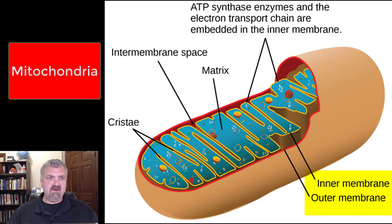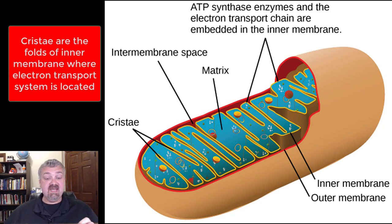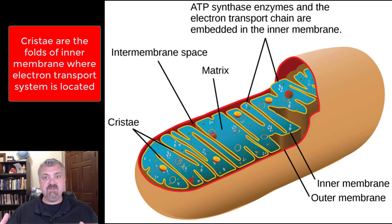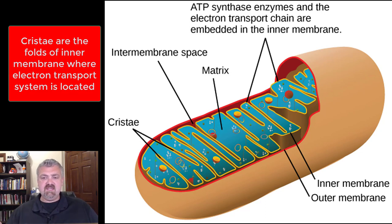The inner membrane is where the business end occurs. The inner membrane has, as you can see here, the cristae — those are the folds. And like everywhere else in the body, folds are used to increase surface area. Then you have the matrix, which is the goopy substance. The folds, or the cristae of the inner membrane, are where the actual enzymes are that generate ATP.